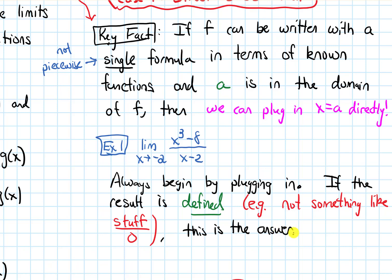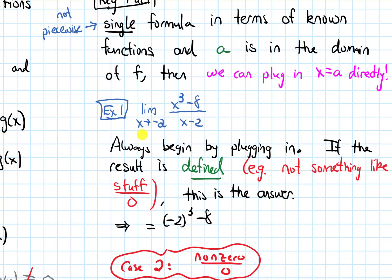For this limit, if I plug in, I get negative 2 cubed minus 8 on top and negative 2 minus 2 on the bottom. Simplifying, the numerator becomes negative 16, the denominator is negative 4, and dividing those we get 4. That is definitely defined, not undefined like stuff over 0, which means that is our answer.